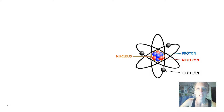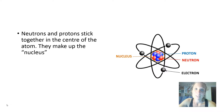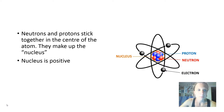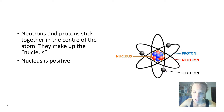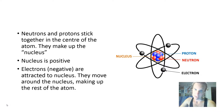So there's our diagram of our atom once again. Note that the neutrons and the protons are stuck together in the very, very center of the atom, and they make up what's called the nucleus. The nucleus is positive because it's made of positive protons and neutral neutrons. The electrons, which are negative, are attracted to the nucleus and they move around it. So the electrons, together with the nucleus, make up the entire atom.